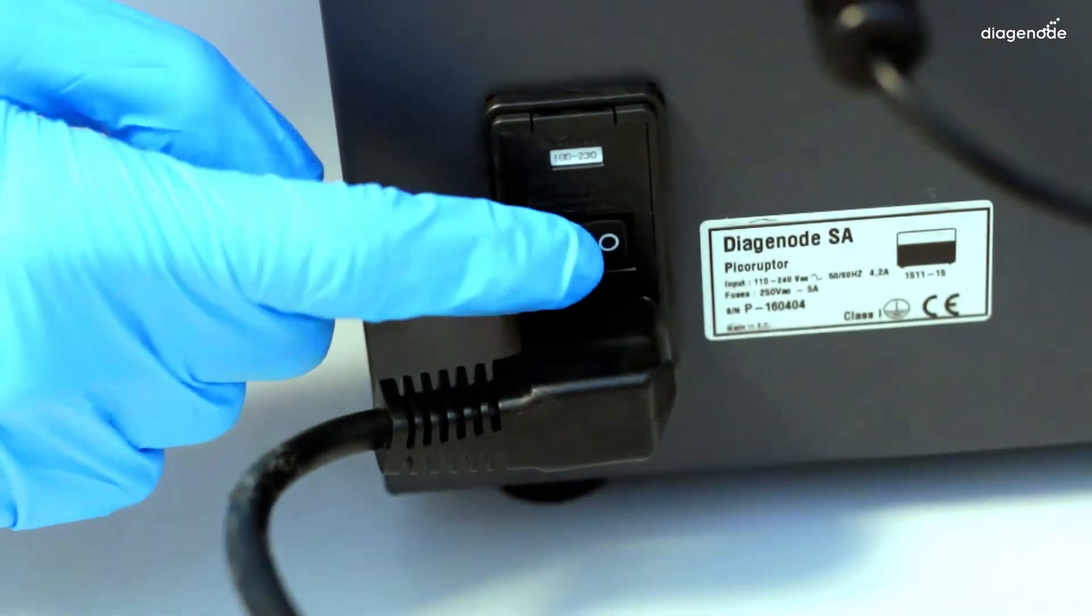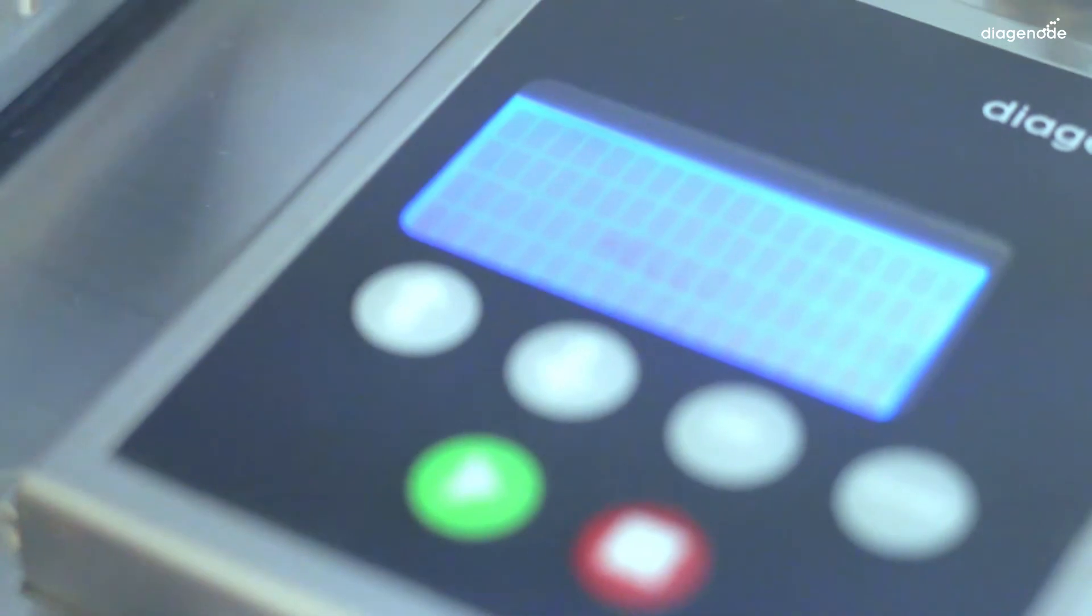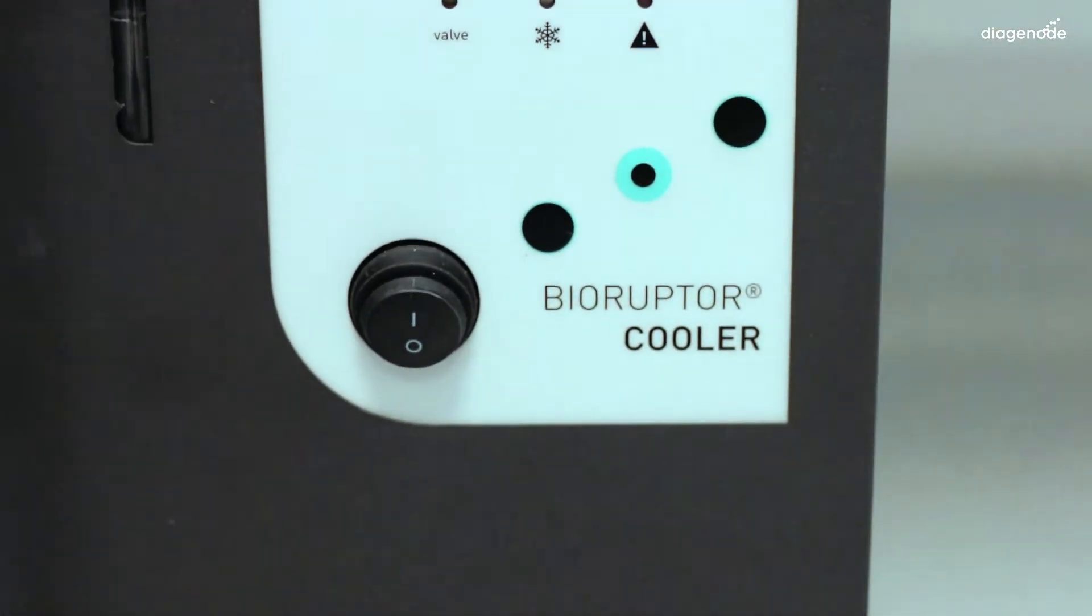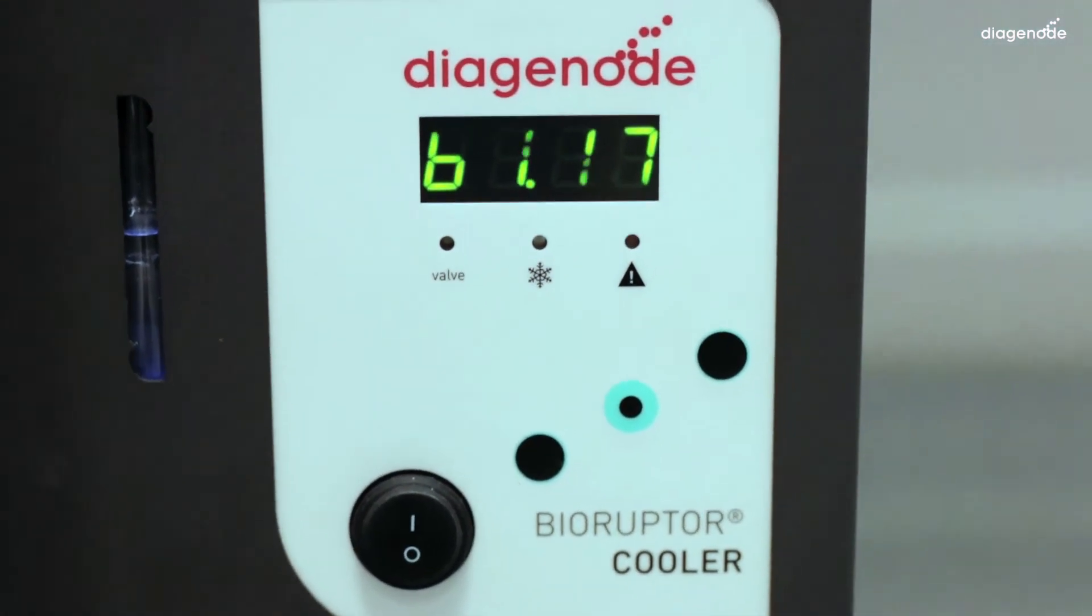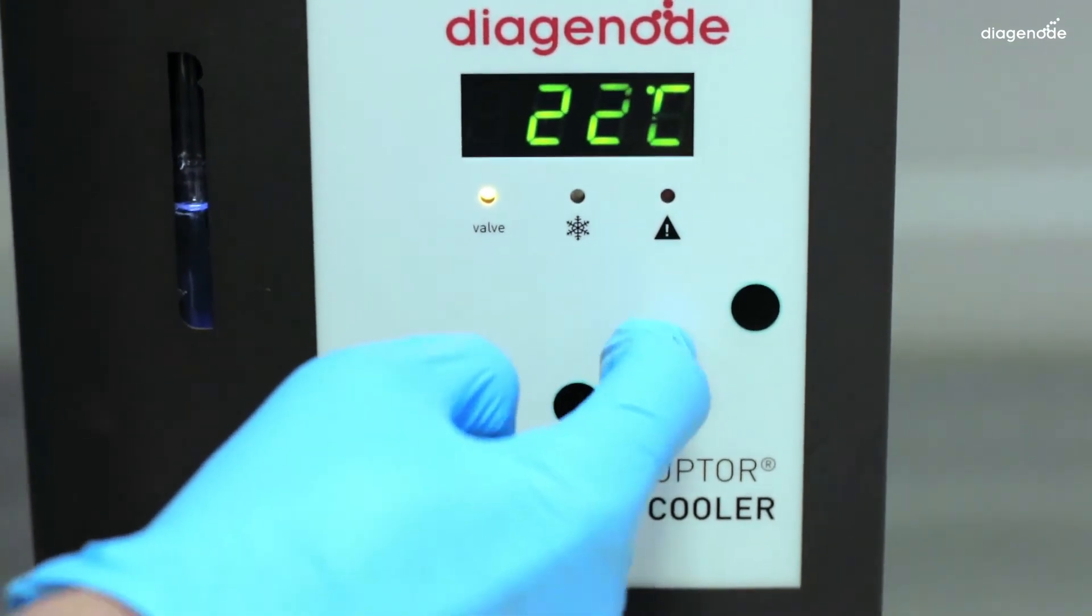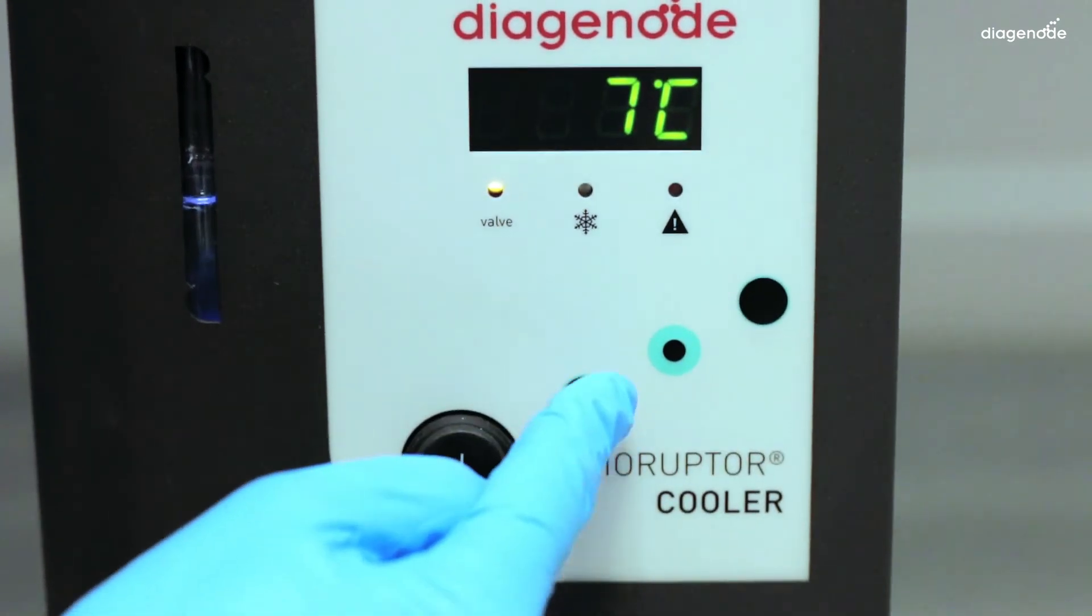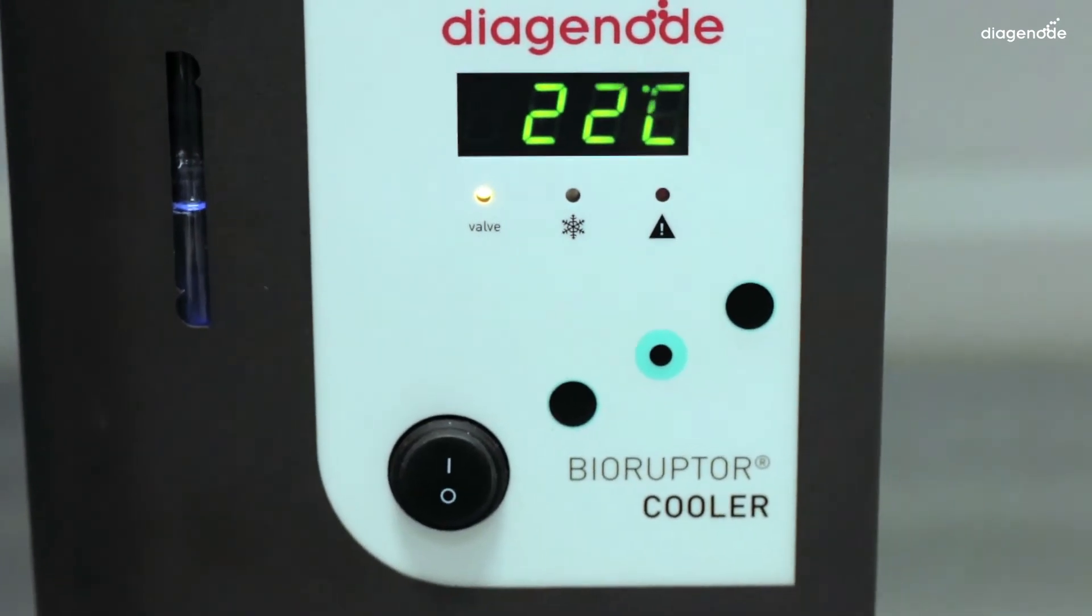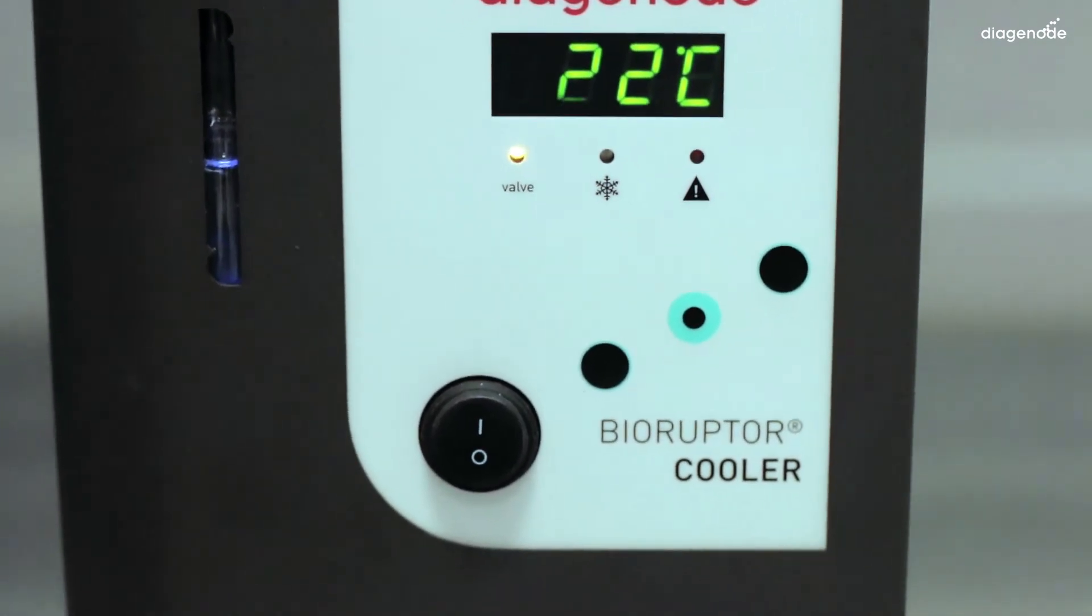Switch on the back side of the sonication unit and press the main switch on the front side of the cooler system to start the pump. Set the temperature to 4 degrees by pushing the center button. The button up will raise the desired temperature, while the button down will lower it. When temperature is set, push the center button one last time.